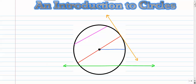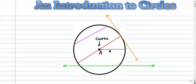We'll define a few of these lines and segments on your screen here and then we'll work into some central angle examples. When we talk about circles, we have a center — obviously right here. A lot of times the center will just be labeled with a capital letter, and then we can call the whole circle 'circle A.' The blue segment that stems from the center and goes to the circle is called a radius.